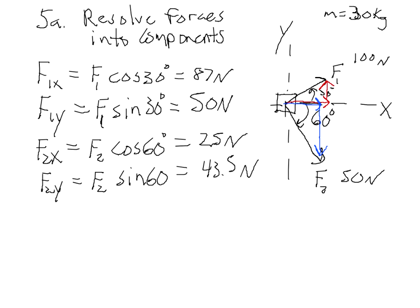Check the directions. F2X, the horizontal blue arrow, is pointing in the positive X direction, so it's positive. But F2Y, the vertical blue arrow, is pointing down. That is the negative Y direction, so it's actually negative.